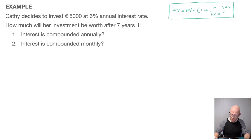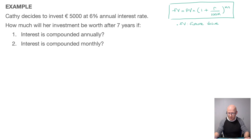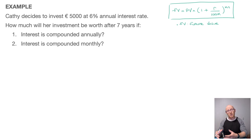Capital FV stands for the future value. The whole idea there is that if we invest a certain amount, the future value is how much we can expect that amount to be worth after a certain number of years.